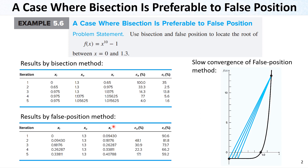For the false position method, we again started with the same initial values, but now we are not using the midpoint and trying to find XR by the false position method formulation. The first error is very large at 90%, and here it is 35%. It actually didn't converge well. The approximation error is getting smaller from 48 to 17, but at 5 iterations it was not able to find a good estimate for this value.